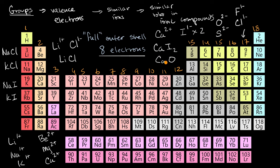The big picture here is that the column in which an element sits tells you a lot about its reactivity because it tells you in general how many valence electrons it has. Atoms are most stable when they have a full outer shell. That helps you predict whether it's easier for them to lose electrons and form a positive ion, or gain electrons and form a negative ion. And from that, you can make predictions about the types of ionic compounds that could be formed with the different elements.